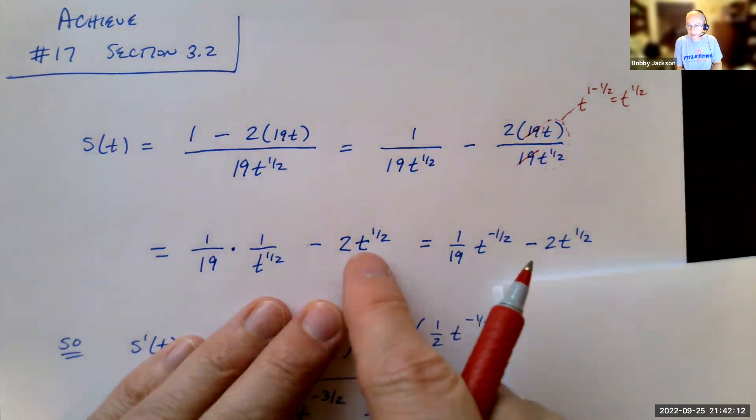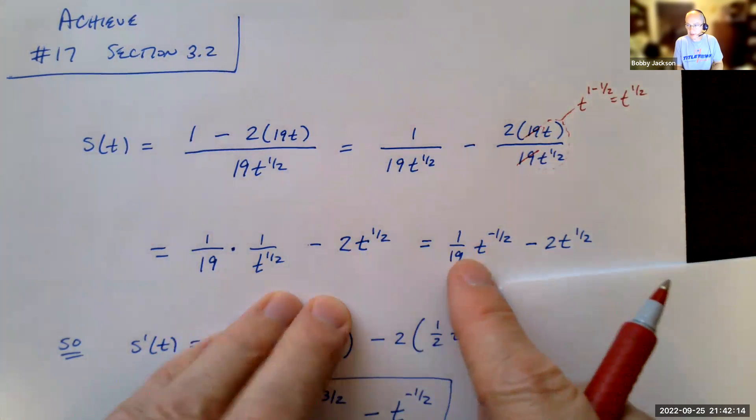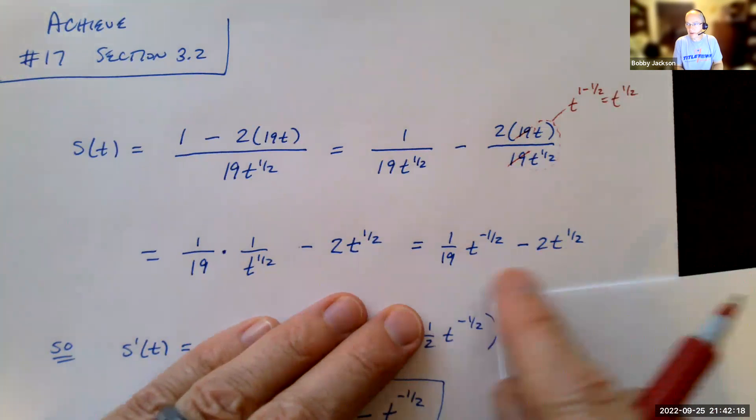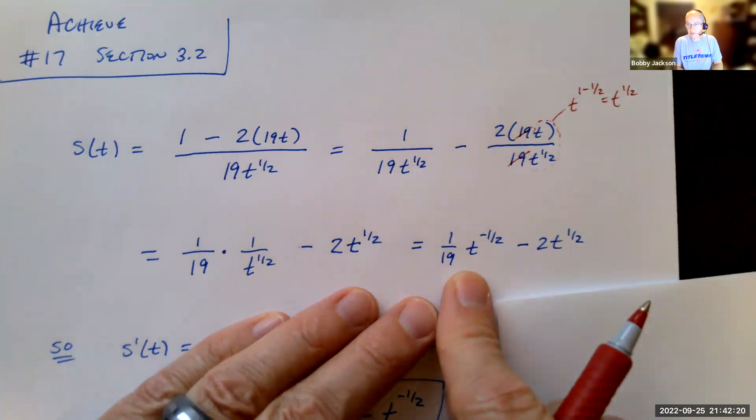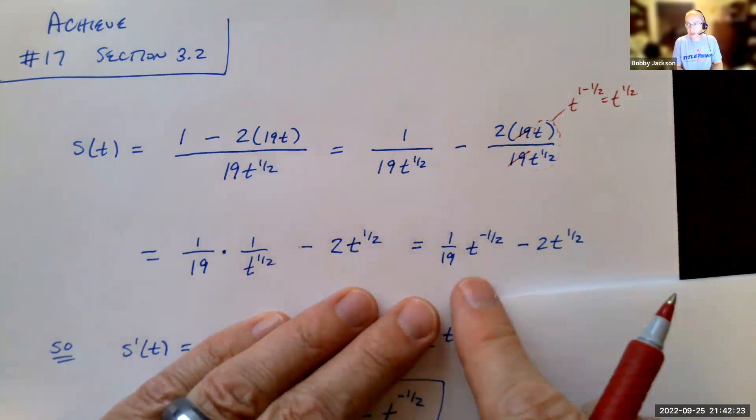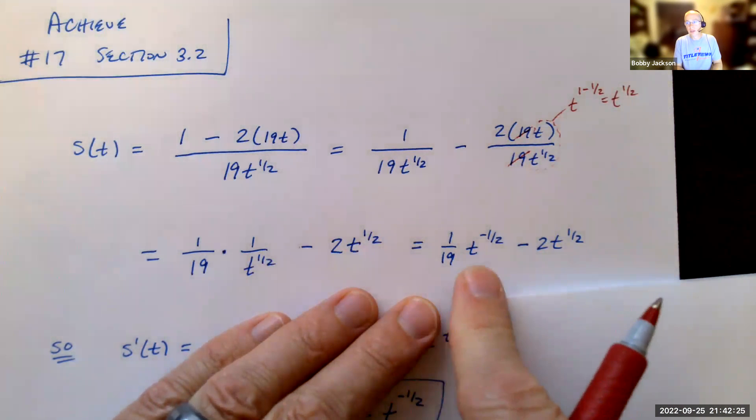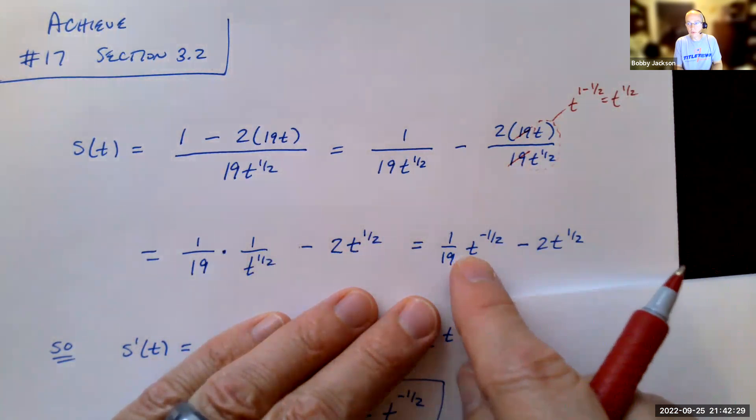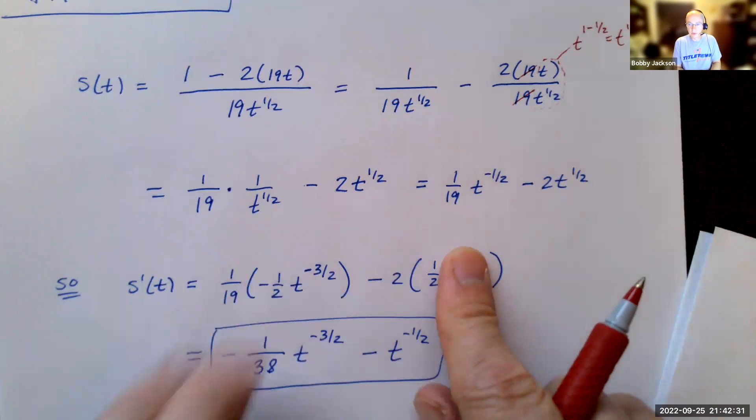And so this now becomes 1/19th, as I said, t to the negative 1/2 minus 2t to the 1/2. And now we have simplified this function. And we can now just simply use the difference rule, constant multiple rule, and of course, power rule. So now we can find the derivative.